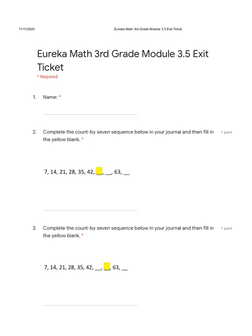Let's count by seven: seven, fourteen, twenty-one, twenty-eight, thirty-five, forty-two. If you're not sure what comes next, you can add forty-two plus seven. Forty-two plus seven is forty-nine.